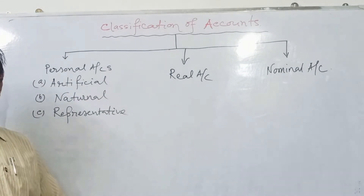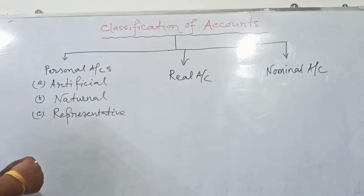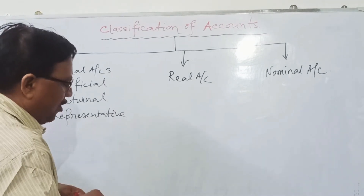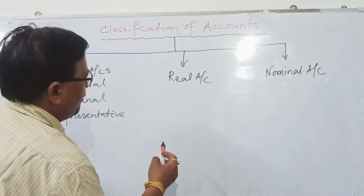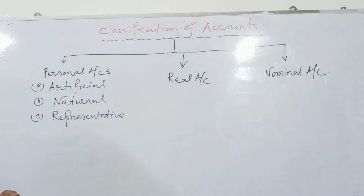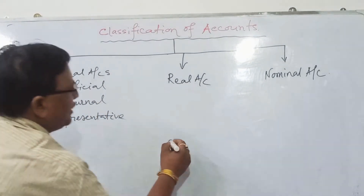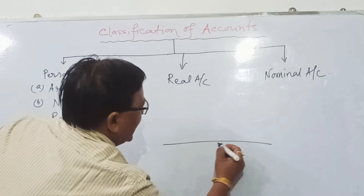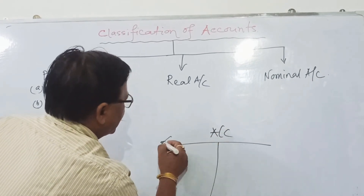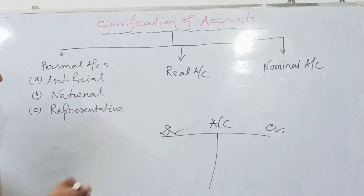In an account in T-form, suppose any account — their T-form means this is the T-form. Accounts may have a left-hand side and a right-hand side. The left-hand side is the debit side and the right-hand side is the credit side.